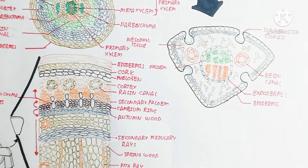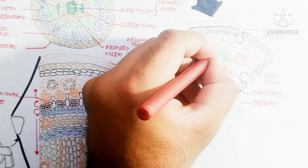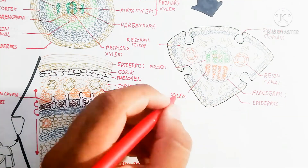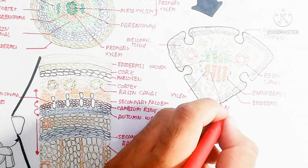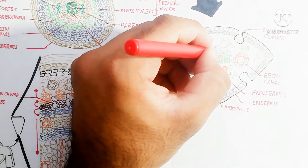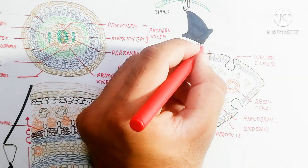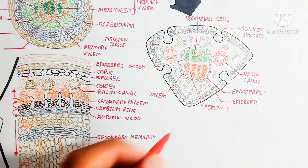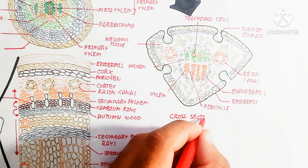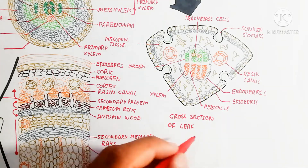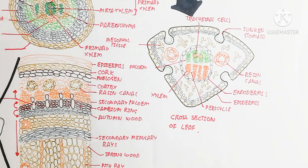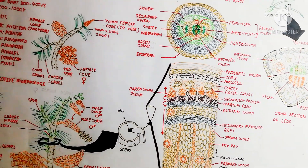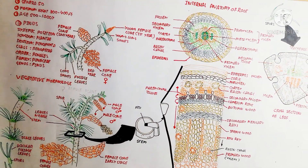The orange color shows the xylem while the green color shows the phloem. Together they form the vascular bundle, which is wrapped by tracheid cells. The tracheids are fiber-like structures. Thanks for watching — in the next video we will discuss the physiology and other topics.